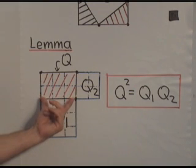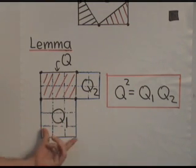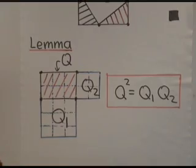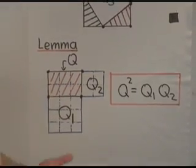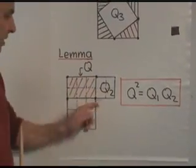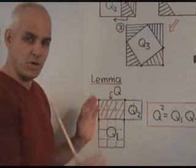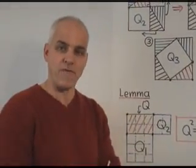The relationship is that the square of Q is equal to Q1 times Q2. So for example, 6 squared is equal to 9 times 4. And it's almost obvious from this picture. We're going to use that lemma now to prove the triple quad formula.